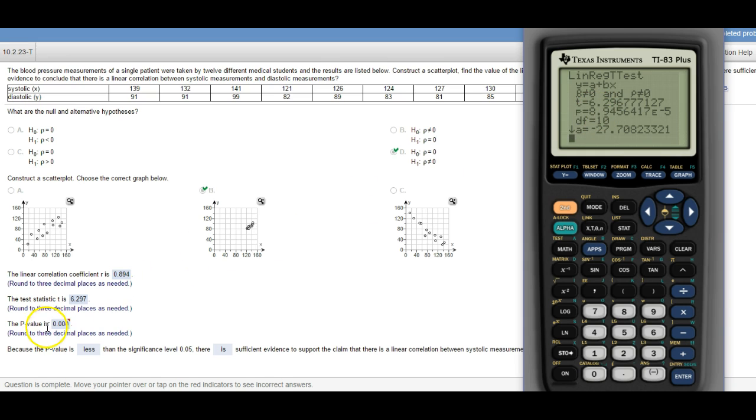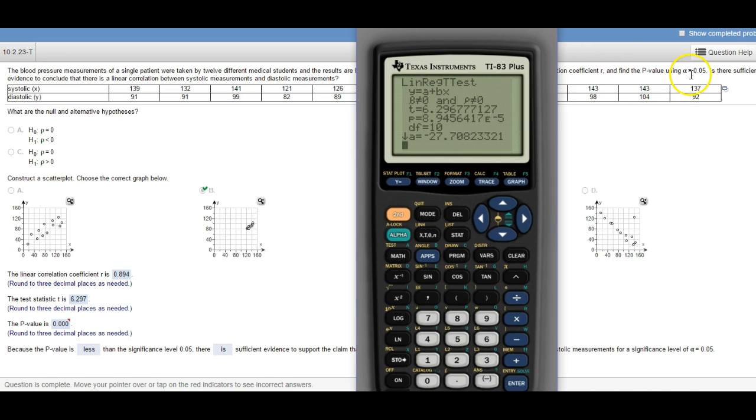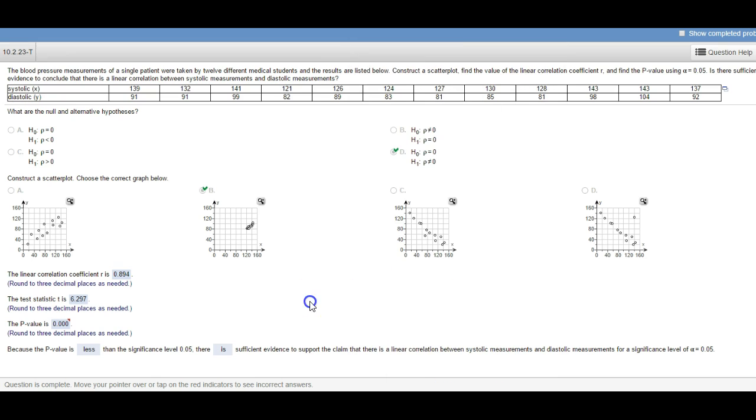So that's where the p-value comes from. Now the p-value, the way that these tests work, the p-value is compared to alpha. And if the p-value is less than alpha then there's evidence to support the claim that there is a correlation. So our p-value is zero, that's going to be less than any alpha no matter how small alpha is.